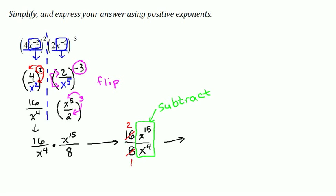I'm finally left with 2, and I subtract the exponents to get 15 minus 4 is 11. With only 1 left in the denominator, I can write this as 2x to the 11.